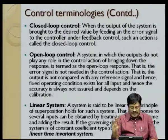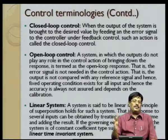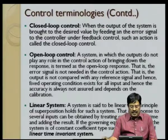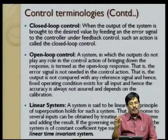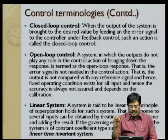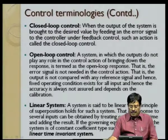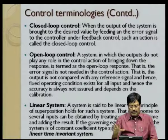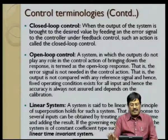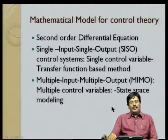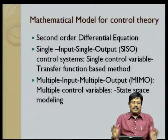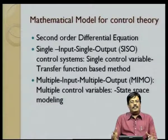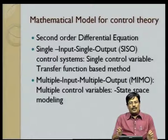Most of our control system design is based on linear systems. A system is said to be linear if the principle of superposition holds — the response to several inputs can be obtained by treating one input at a time and adding the total responses together. If the governing equation has constant coefficients, such a system is called a linear time-invariant system. Next, we discuss the mathematical models required to design control systems.